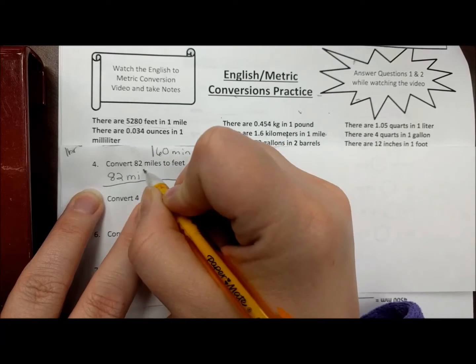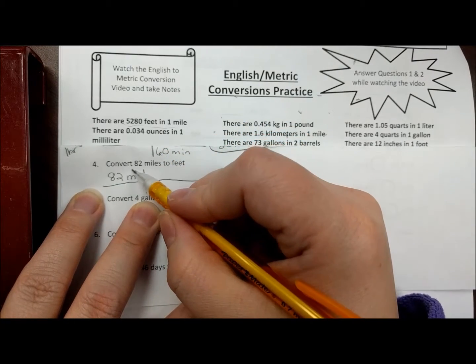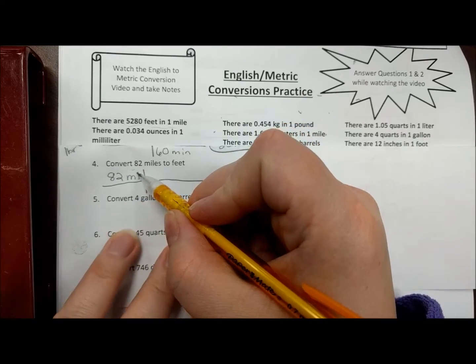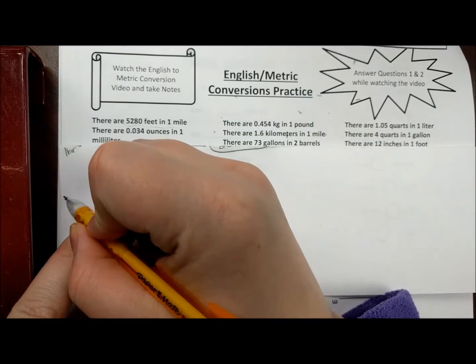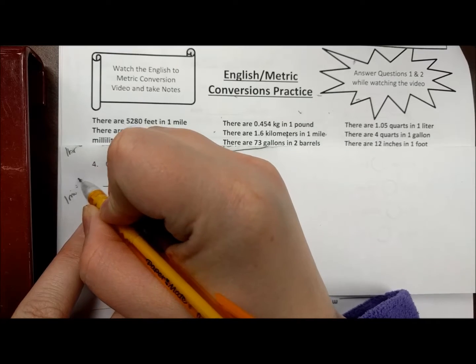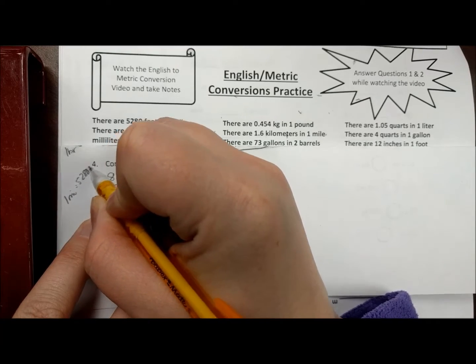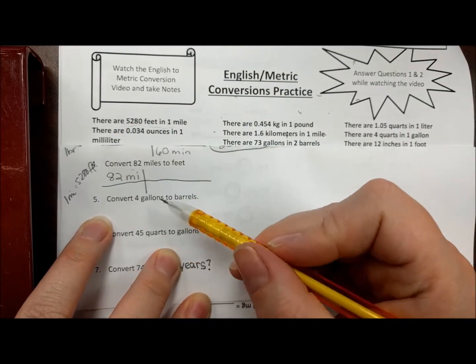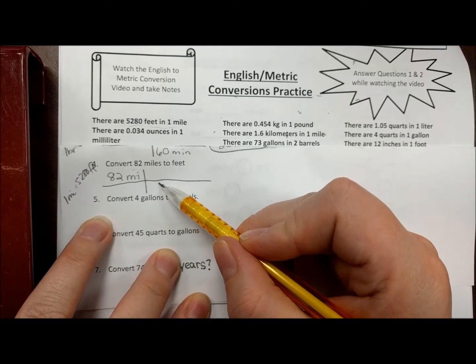So that's what they give me, and I'm trying to go from miles to feet. I know in one mile there's 5280 feet, so I have to figure out what to put where.